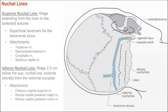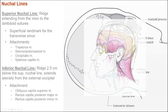In posterior approaches, the nuchal lines of the occipital bone will also be useful — these are where many muscles and ligaments of the neck and back attach to the skull. The superior nuchal line involves the inion — the tip of the external occipital protuberance — and extends bilaterally to the lambdoid sutures; it's where the trapezius, sternocleidomastoid, occipitalis, and splenius capitis attach. The inferior nuchal line is about two and a half centimeters beneath that, where the obliquus capitis superior and rectus capitis posterior major and minor muscles attach. In all approaches, when pinning the patient in the skull clamp, you want to keep the pins near the regions of the superior temporal and nuchal lines where there is a good amount of muscle.